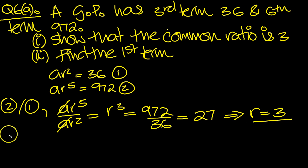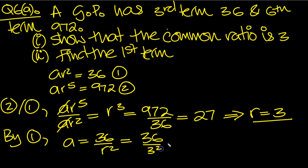Now sub that into equation 1, so by equation 1, we see that A is equal to 36 over R squared. Just move the R squared from times down to divide. 36 over 3 squared, which is 9. 36 over 9 is 4. So A equals 4, so the first term then is 4.